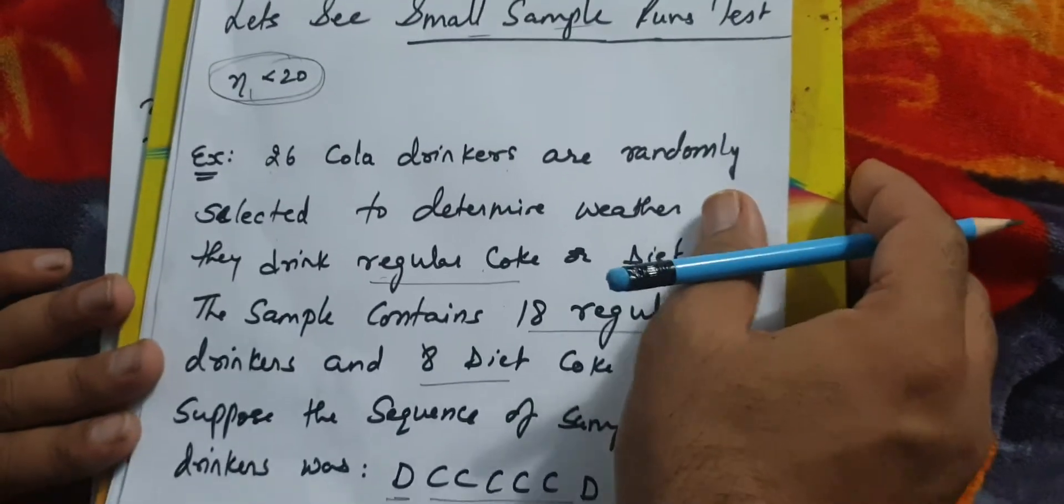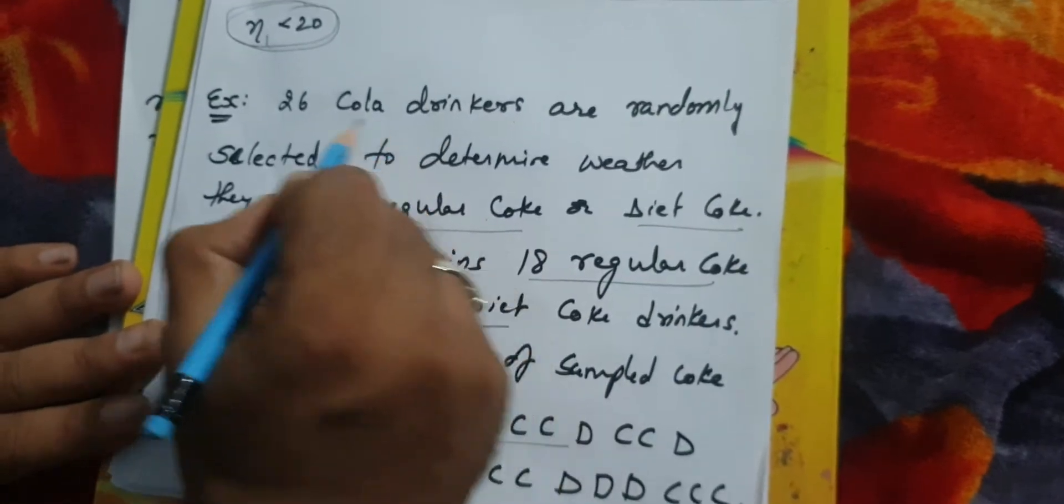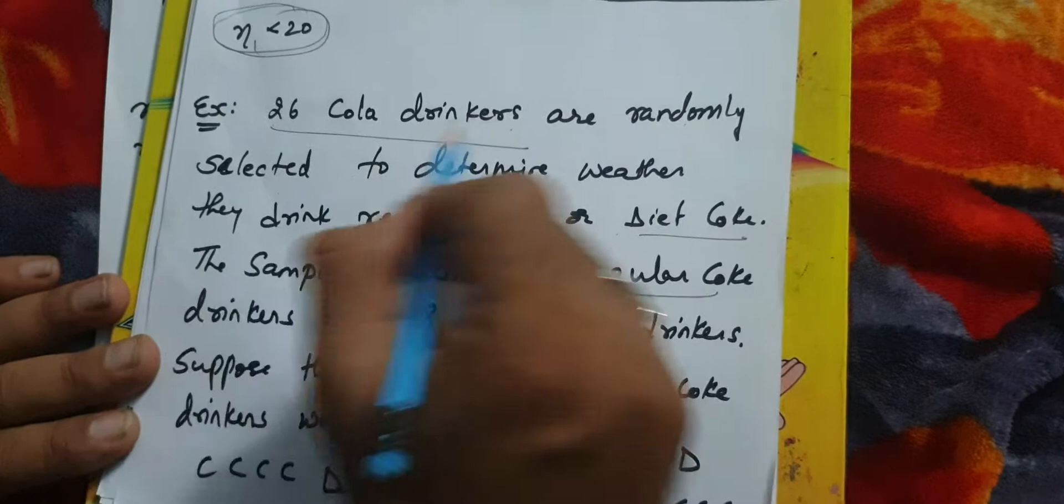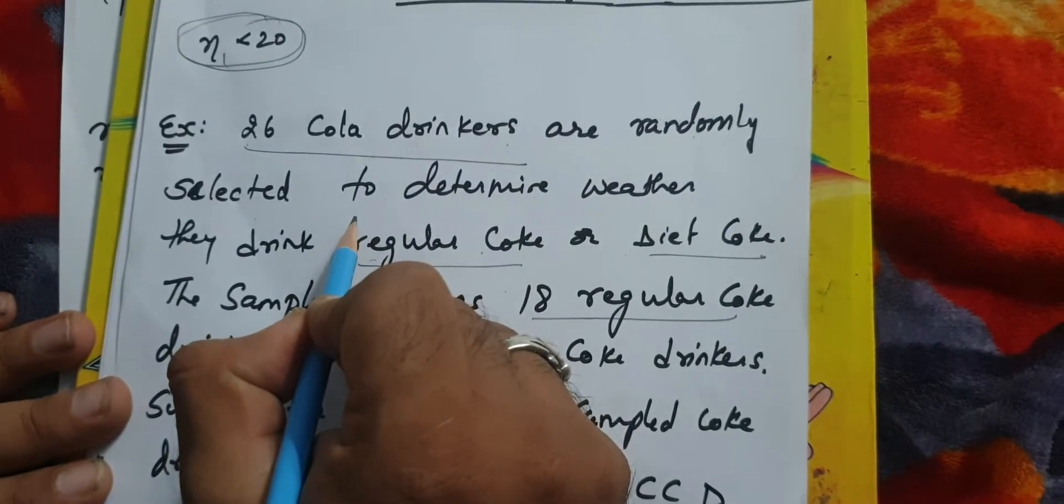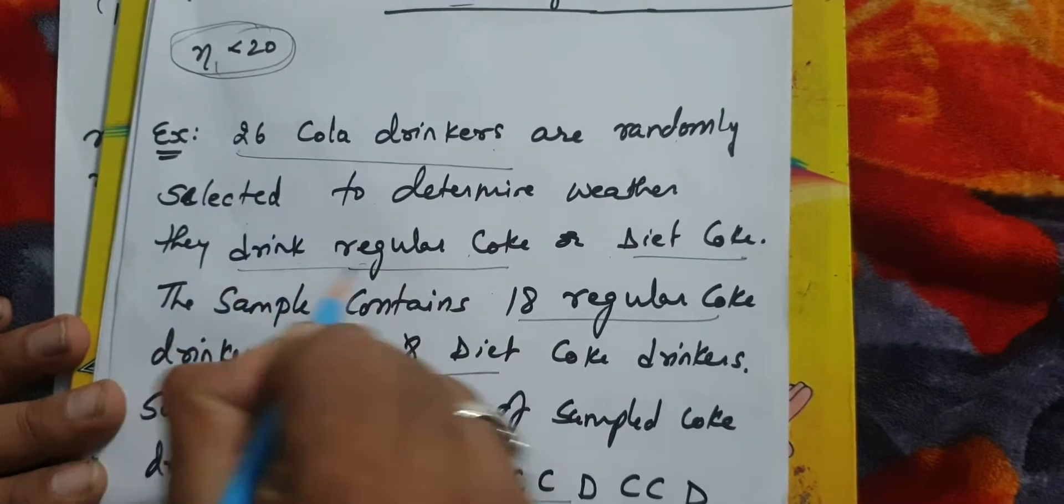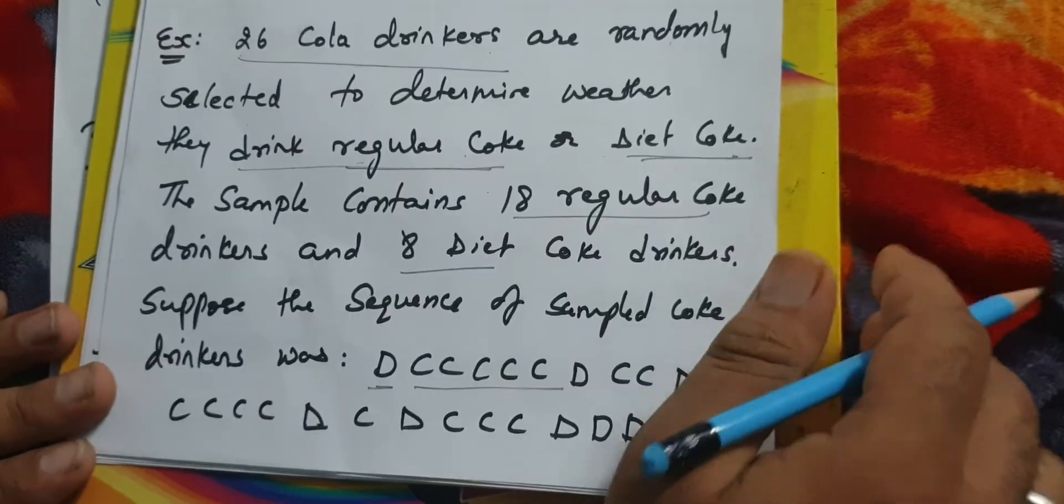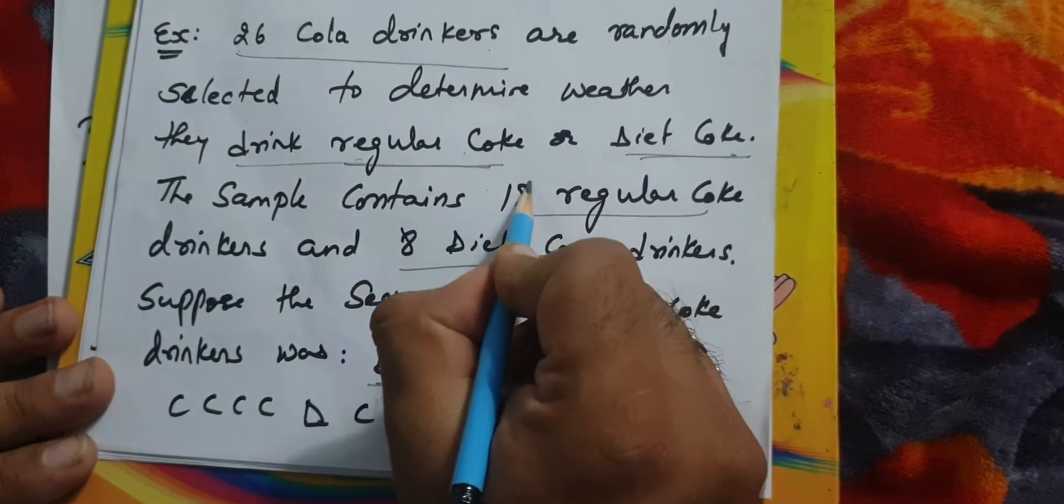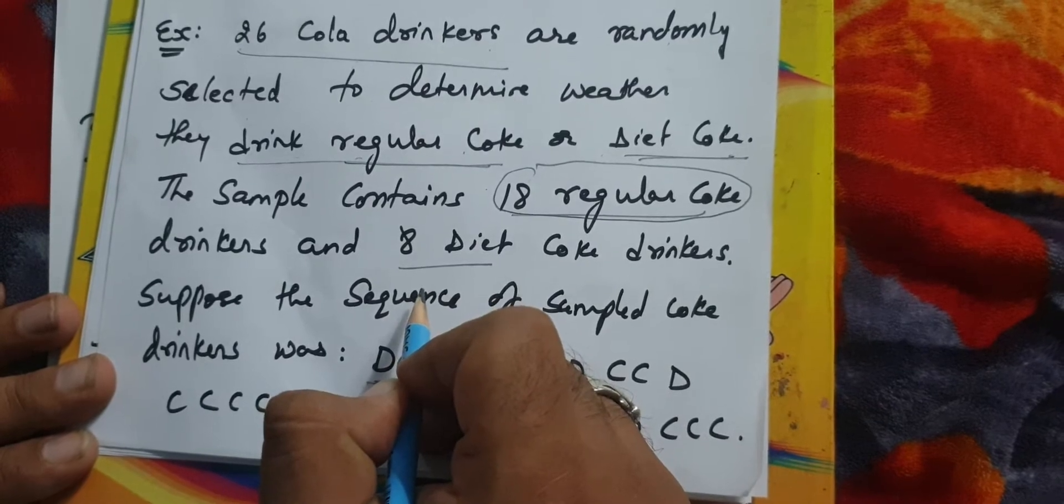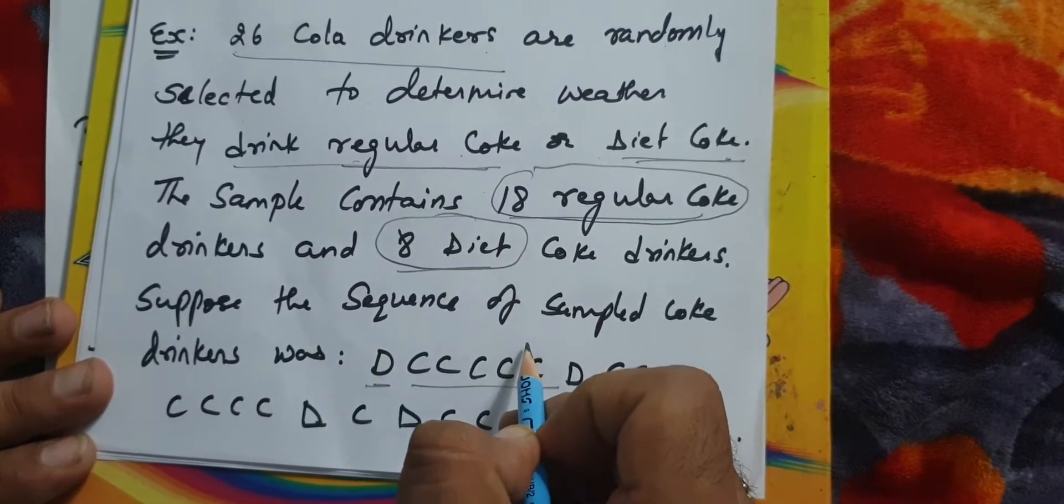Now we will see it by using an example. There are 26 cola drinkers randomly selected and there are two types of cola sold in the market: regular coke and diet coke. The sample has 18 cola drinkers who drink regular coke and 8 who drink diet coke.